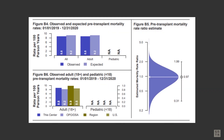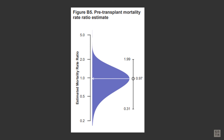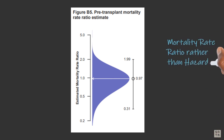The five-tier assessment for survival on the waiting list is derived from the estimated mortality rate ratio for pre-transplant mortality, as reported in Figure B5 of the PSRs. The mortality rate ratio is a measure of how many patients died before undergoing transplant during the two-year period evaluated, relative to how many were expected to die. The tier for survival on the waiting list is calculated following exactly the same process as described for the one-year organ survival outcome, but replacing the hazard ratio with the mortality rate ratio.